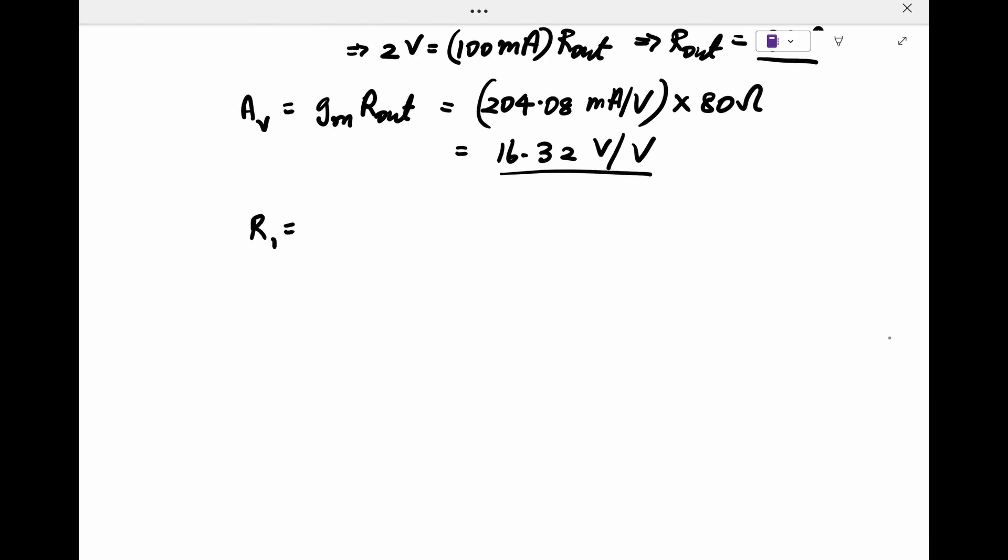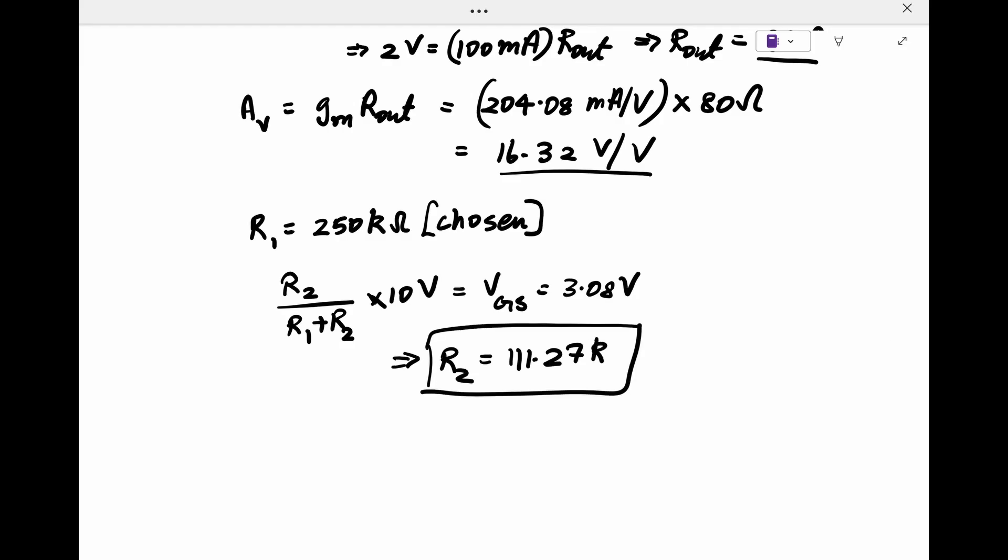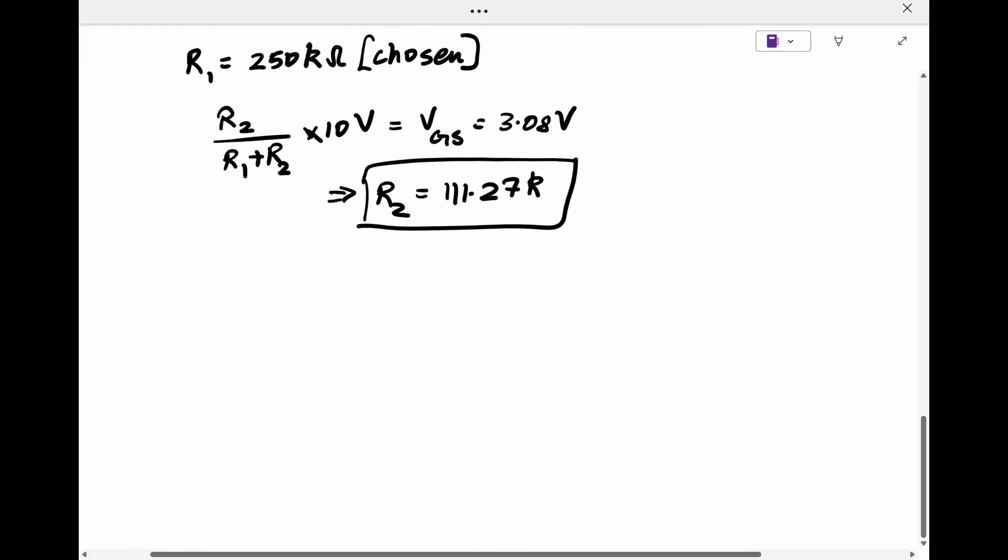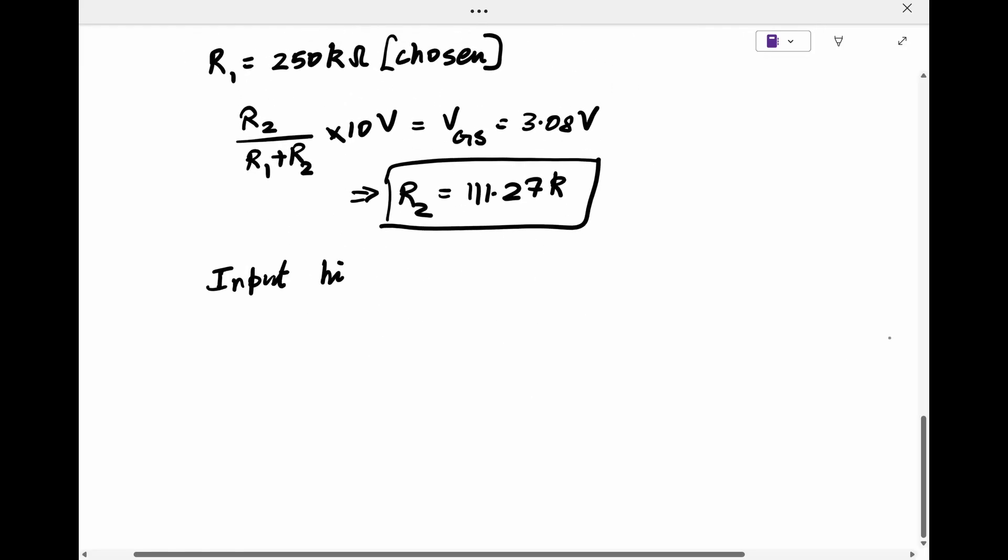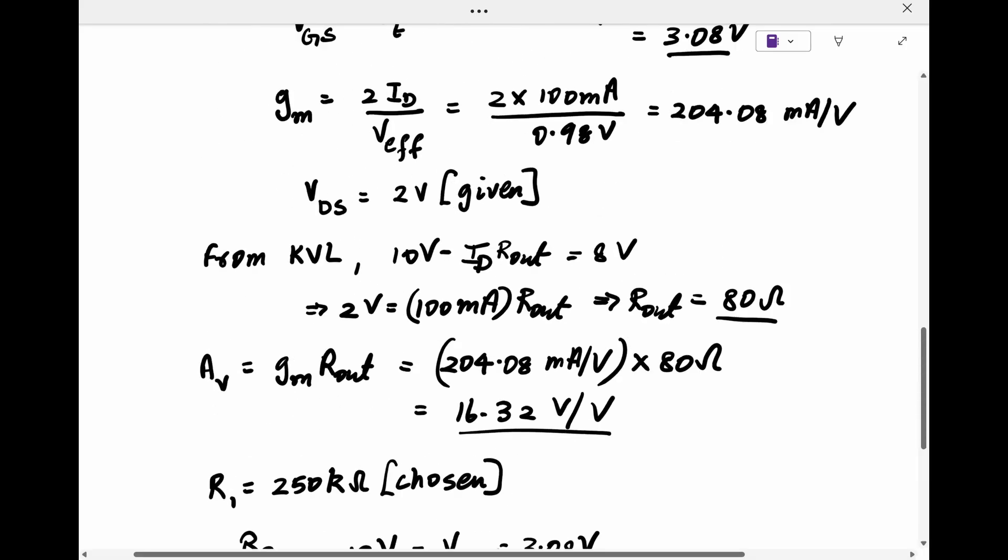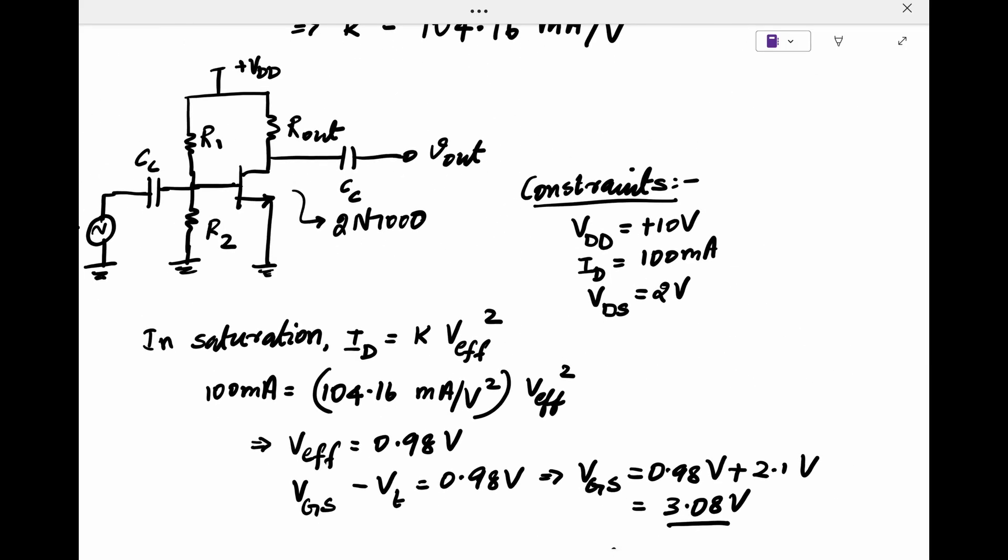Looking back at the basic amplifier circuit, we now try to plug in practical values that we can use to build. Choosing R1 as 250k, we can obtain R2 from the simple voltage divider rule. For a VGS of 3.08 volts, we get R2 as 111.27k.